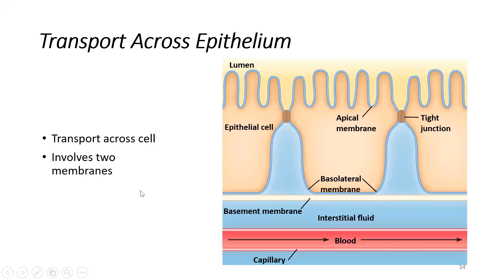Transport across epithelium happens across two different membranes. Epithelial membranes — and just to backtrack and explain what an epithelium is — these are the lining cells of all of our body surfaces. Epithelia lines our skin, the internal surfaces of all our body cavities, the gastrointestinal tract, the respiratory tract, and all of our blood vessels. Movement across these membranes requires movement across the apical surface as well as the basolateral surface. The epithelium is made up of epithelial cells lining one against each other, creating a continuous membrane.